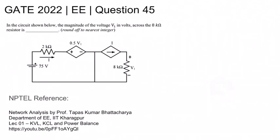This is GATE 2022 Electrical question number 45. In the circuit shown below, the magnitude of the voltage V1 in volts across the 8 kilohm resistor is being asked, with round off to nearest integer.